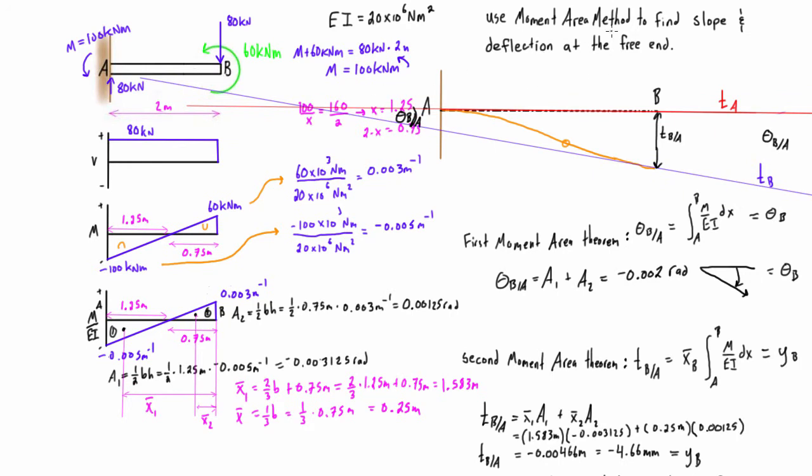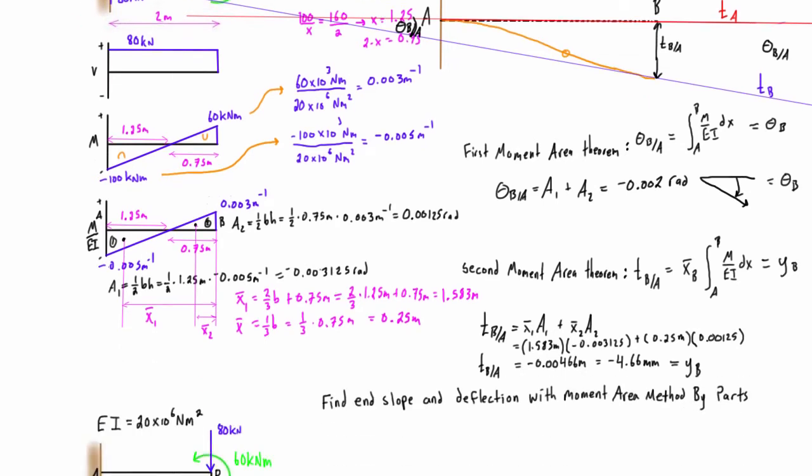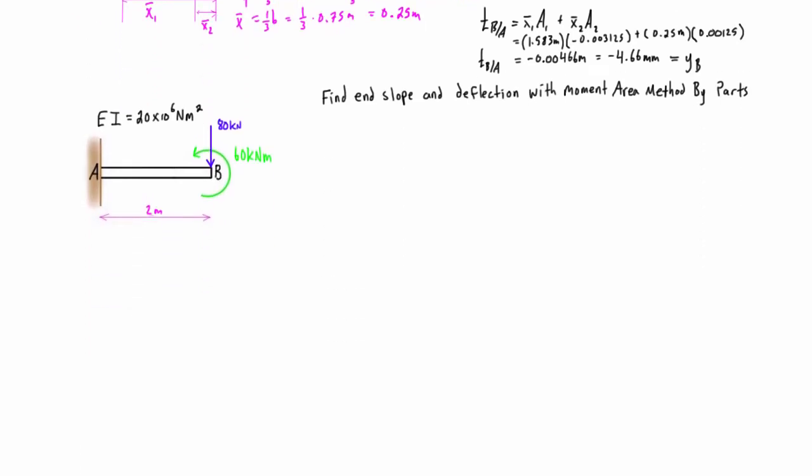This is what we were left off with. We just used the regular moment area method and we generated a single M over EI diagram. We found the slope and deflection with all the tangents and first and second moment area theorems.